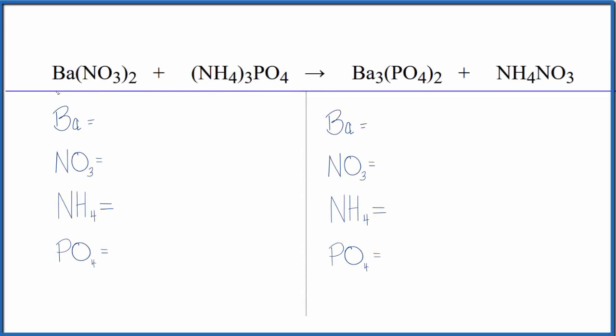To balance this equation — barium nitrate plus ammonium phosphate — we're going to use a bit of a trick that will make it a lot easier. First off, let's count the atoms up and balance the equation.